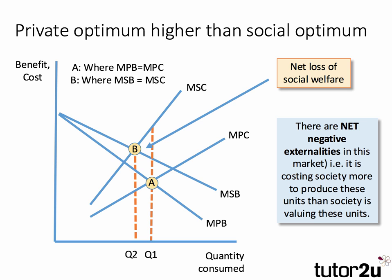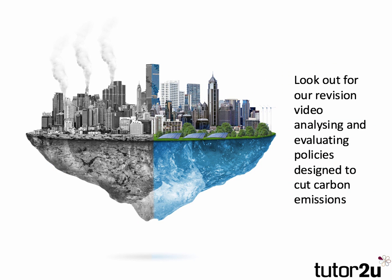Key evaluation point: in most situations there are going to be both positive and negative externalities, and the key thing is the significance and valuation of each. Oftentimes it's very hard to value externalities because some things don't have an accurate market price. Look out for our revision video on ways to cut carbon emissions — lots of different strategies and policies have been chosen around the world, clearly linked to the whole issue of externalities and market failure. Thanks for joining this revision video.